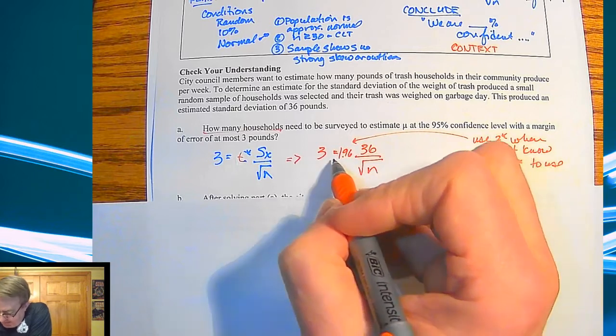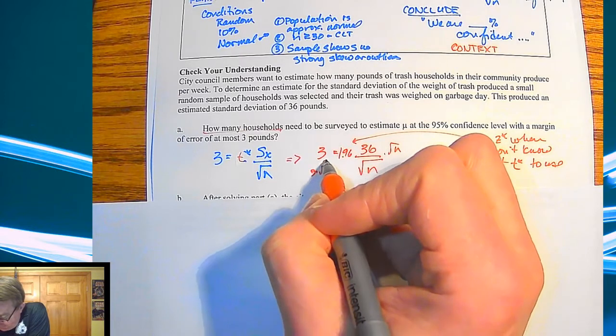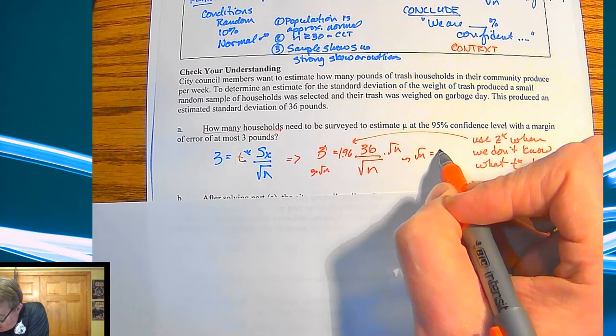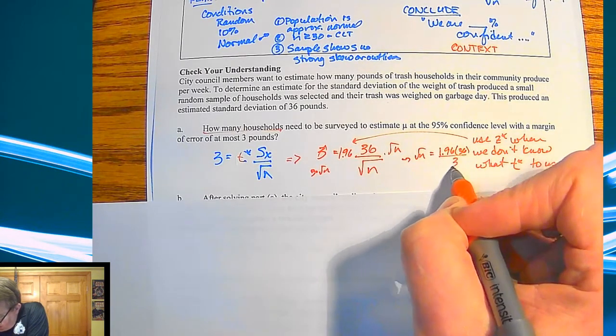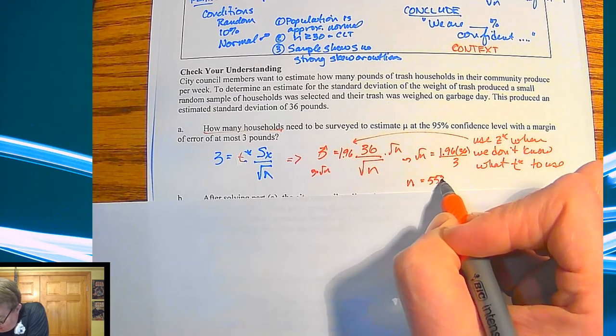So when I do this, you're going to go through the math. Easy way to do it, square root of n on both sides. So then we're going to end up with the square root of n is going to equal 1.96 times 36 divided by 3. And when we do that, we're going to get an answer of 553.19.